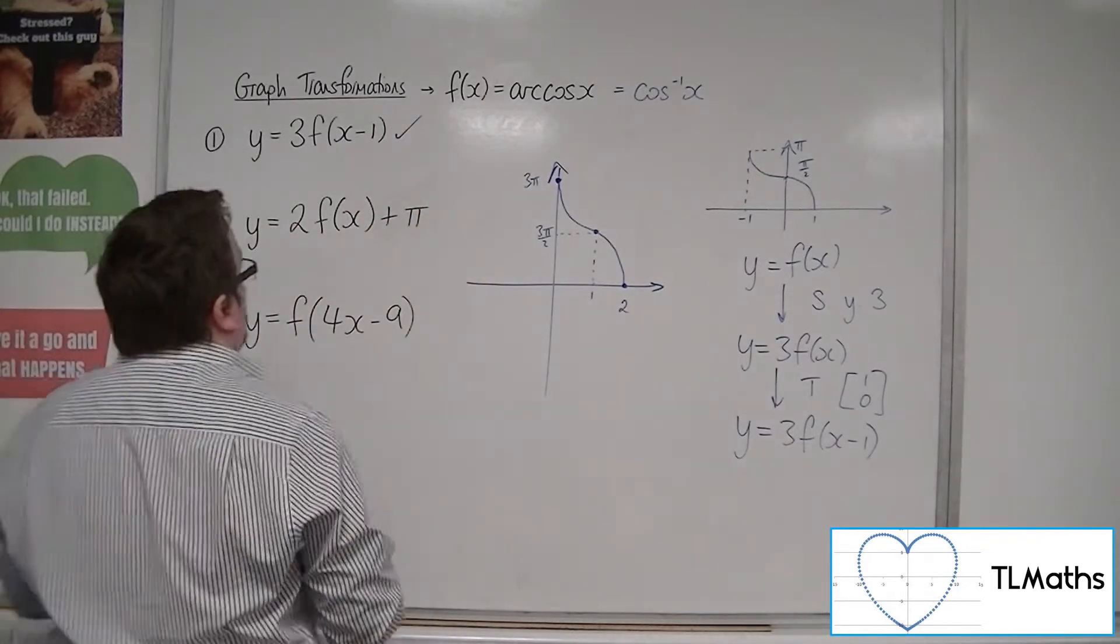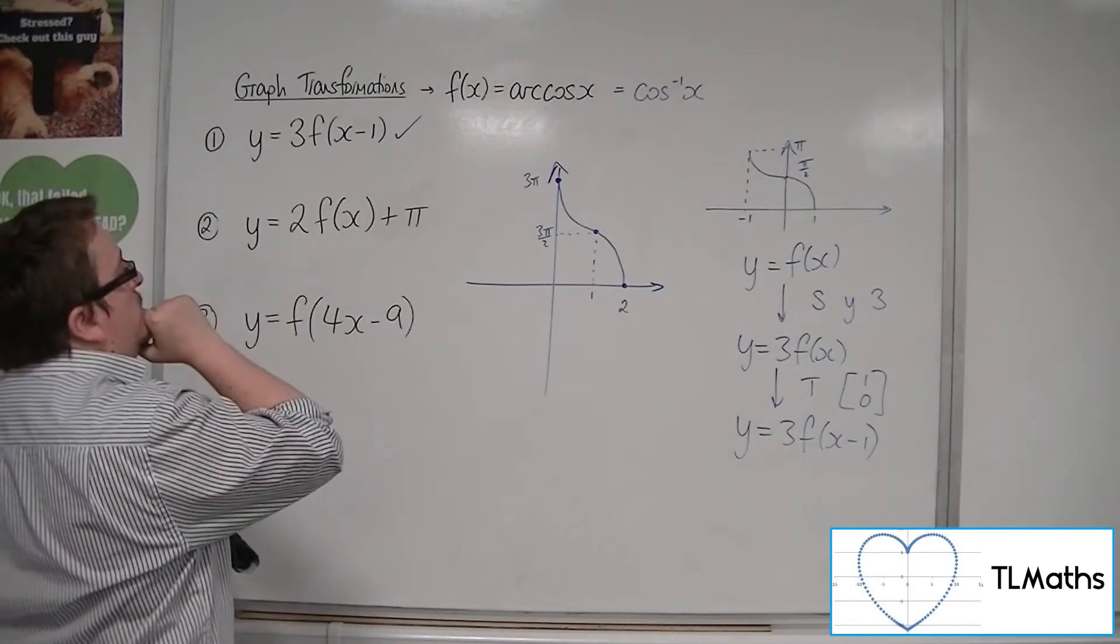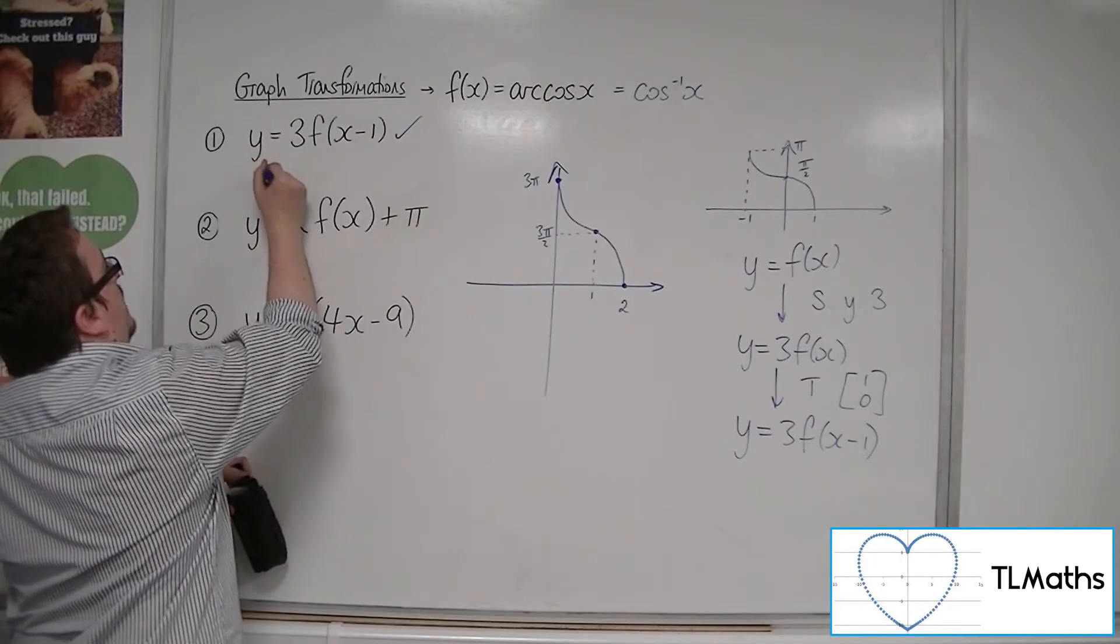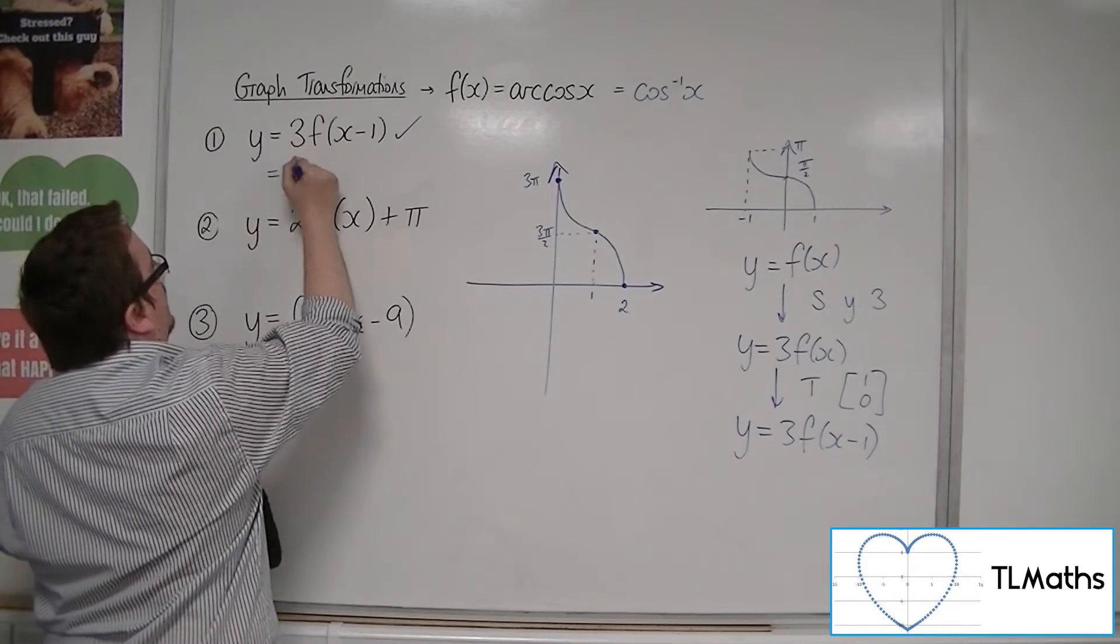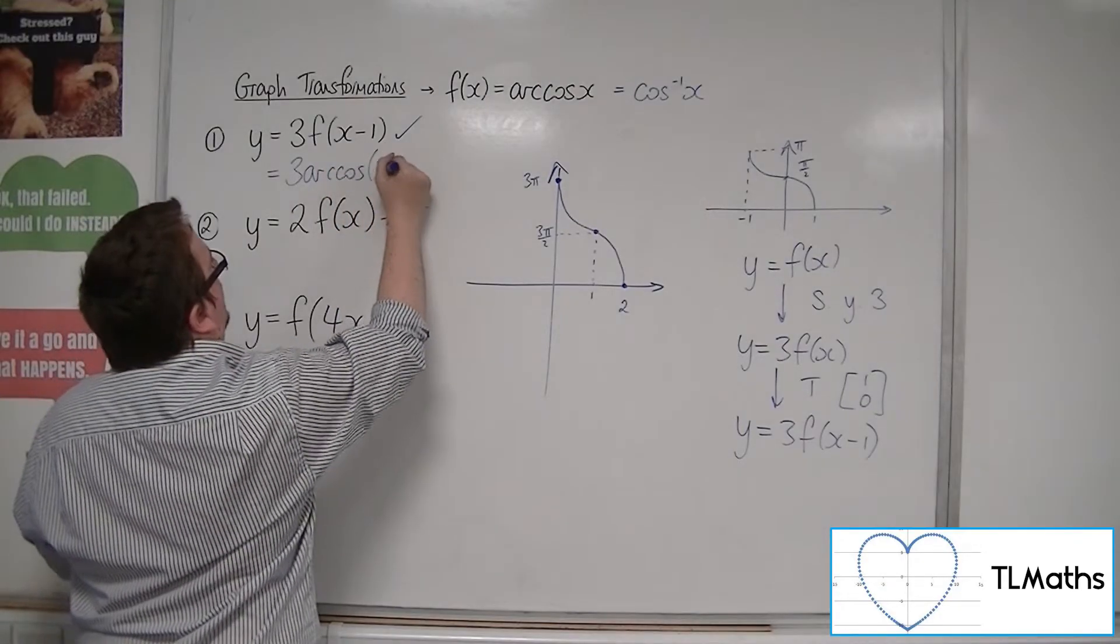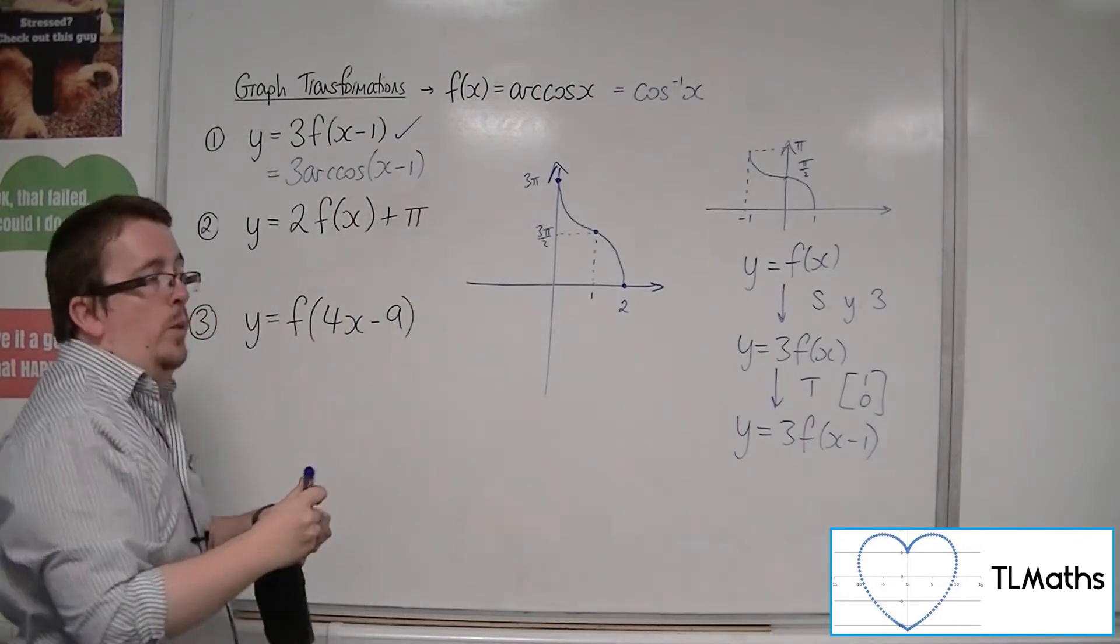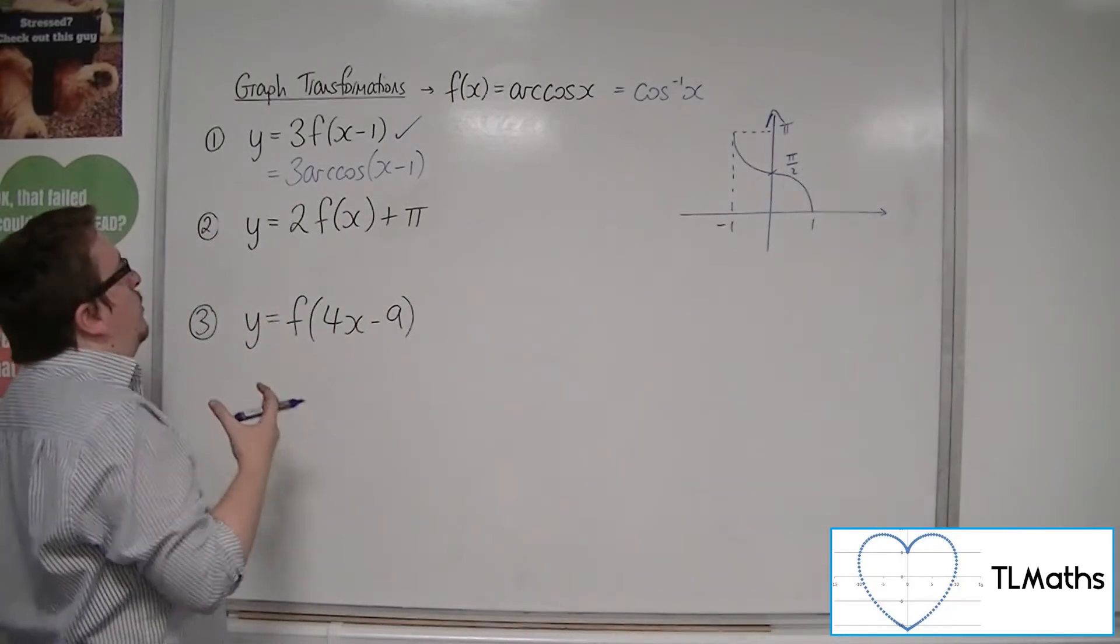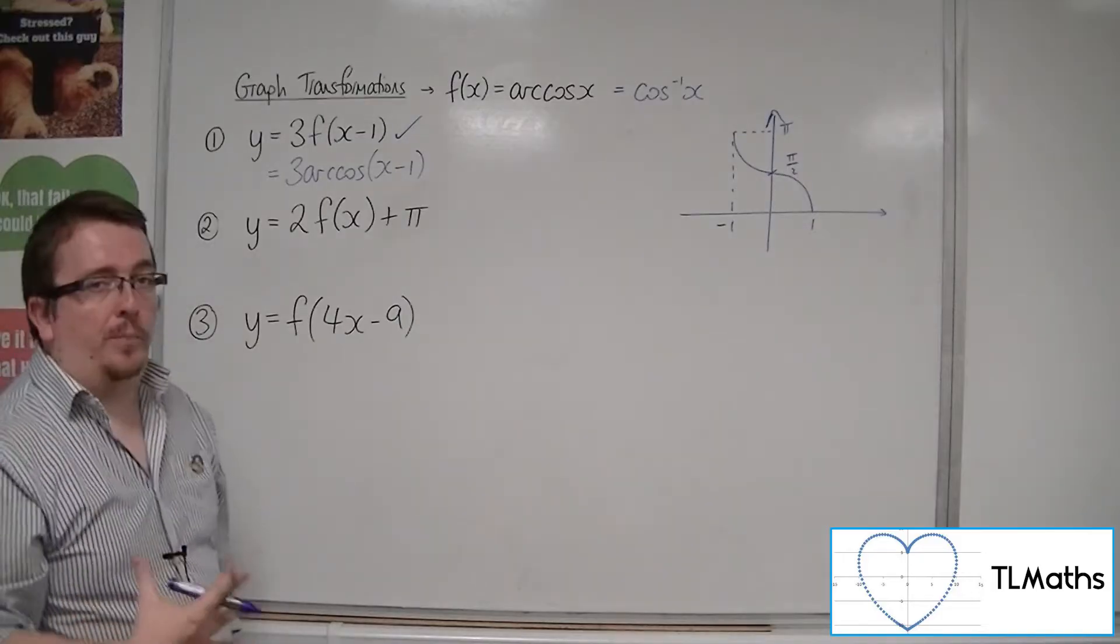Now, number 2, well, let's just write down the equation of that, so just to be consistent, so we would have y equals 3 arc cos of x minus 1. That would be the equation of this new curve. So number 2, y equals 2f of x plus pi.